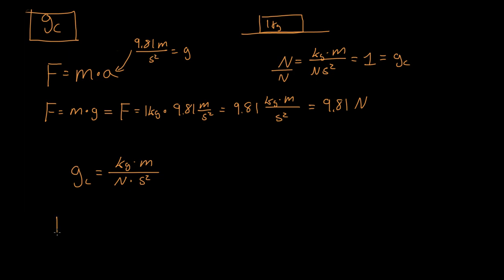So our new equation can be force is equal to the mass times the gravitational constant of acceleration all over GC. So then we have our 1 kilogram times 9.81 meters per second squared. And that is all over a kilogram per meter newton second squared.